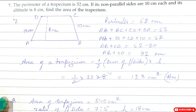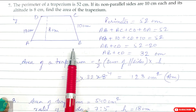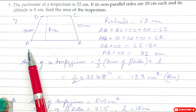Question number 7: The perimeter of a trapezium is 52 cm. If its non-parallel sides are 10 cm each and its altitude is 8 cm, find the area of the given trapezium. So this is a rough sketch of the trapezium.